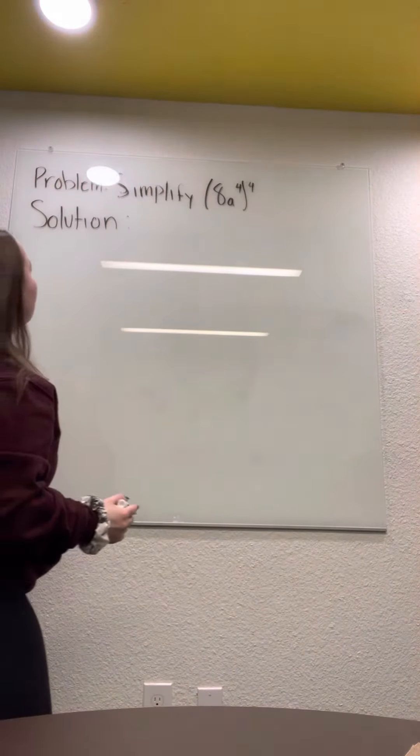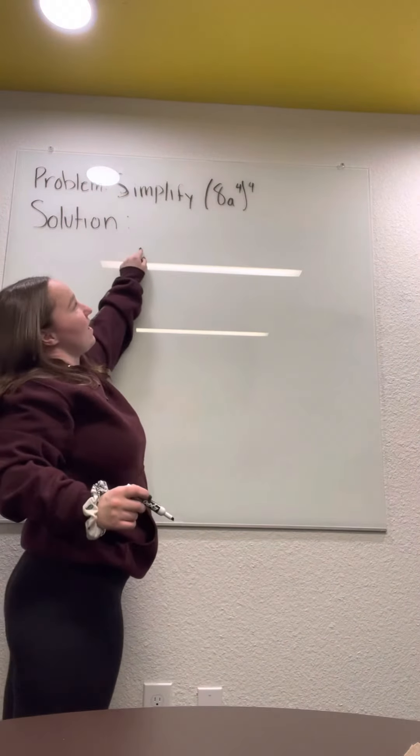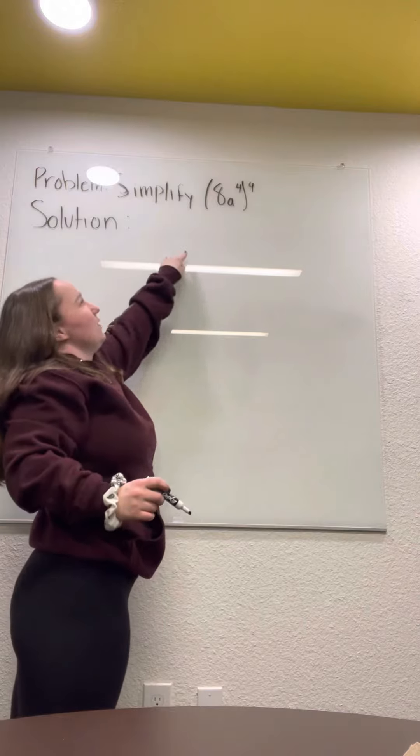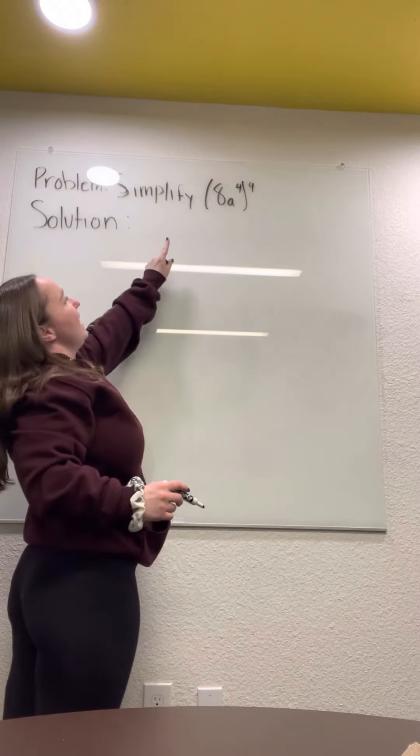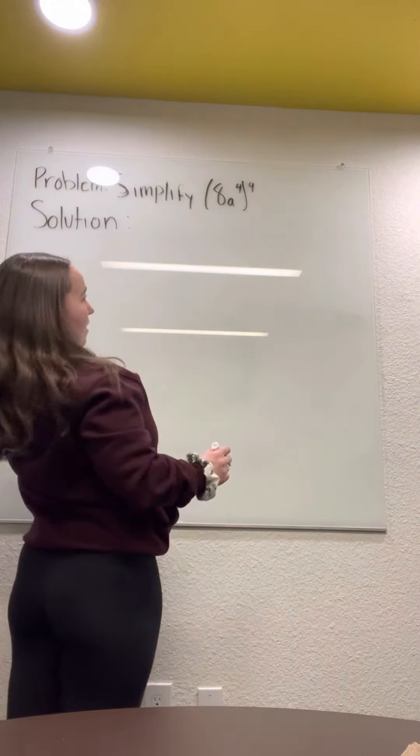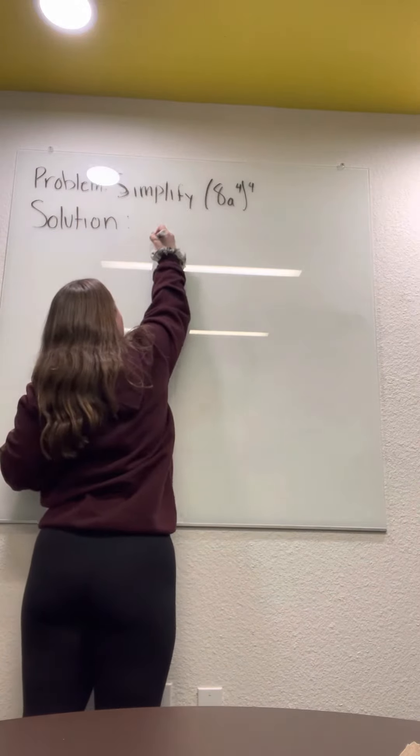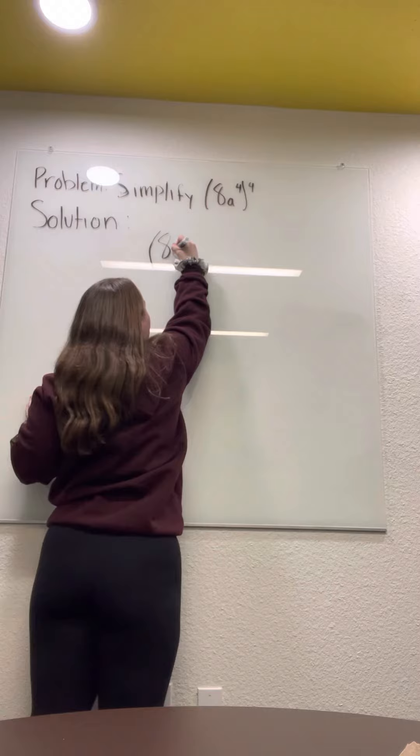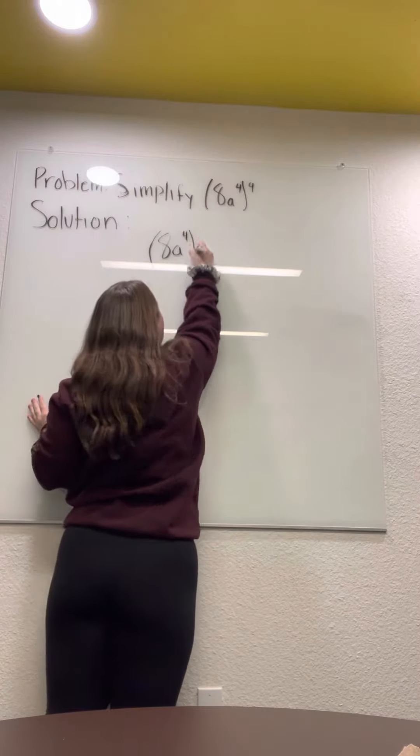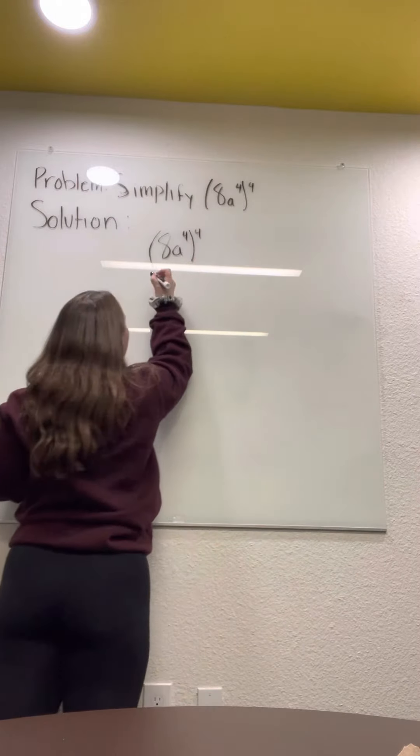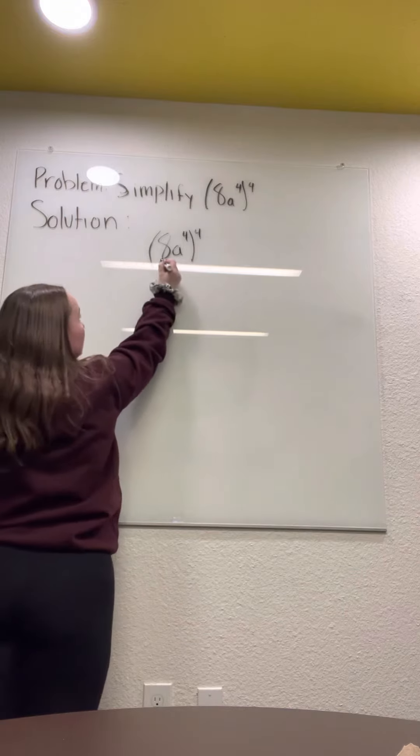So today our problem is we are simplifying exponents. We're going to simplify 8a to the 4th in parentheses, to the 4th. So we have 8a to the 4th to the 4th, so we're going to have to do this four times.